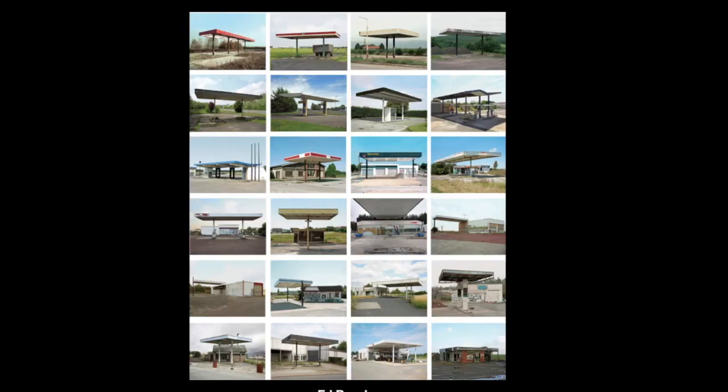Likewise, in this image by Ed Ruscha, he's given us several frames within the composition that work together to form a grid, and within that grid he repeats the image of a gas station. This rhythm is a lot more dynamic than Burdeny's, but it's almost as if we're running around in circles because there's so much sameness. And in fact, that's exactly what Ruscha is after — he was preoccupied by the sameness of suburbia.